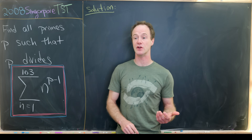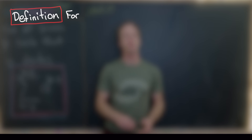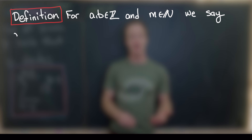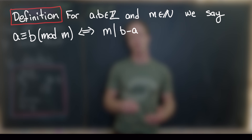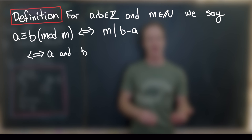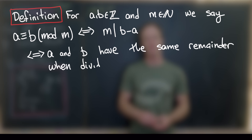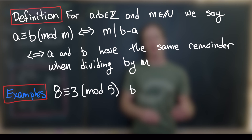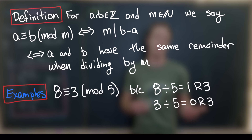Before we do that we need to review the notion of congruence mod m. We say that a is congruent to b modulo m, where m is a natural number, if m divides b minus a. That's exactly equivalent to saying that a and b have the same remainder when divided by m. For example, 8 is congruent to 3 mod 5 because when you divide 8 by 5 you get a remainder of 3, and when you divide 3 by 5 you also get a remainder of 3.